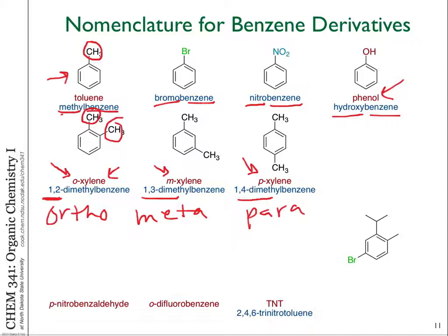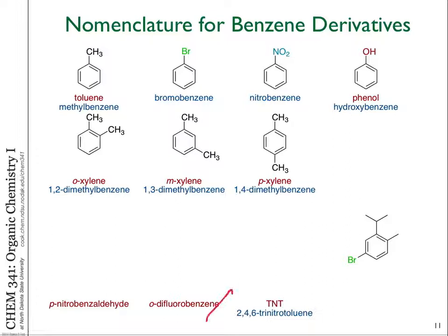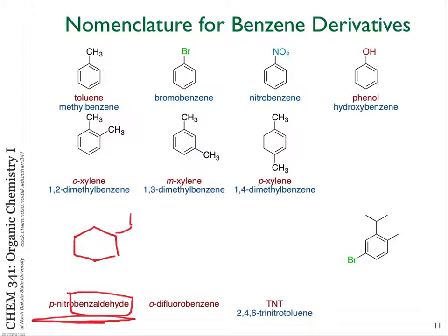Ortho, meta, para are commonly used to describe two substituent positions on benzene — one-two, one-three, and one-four. For example, para-nitrobenzaldehyde: benzaldehyde is the parent with a CHO group. A nitro group is in the para position — that's position four relative to where the CHO is at position one. So the nitro group goes at the four position.